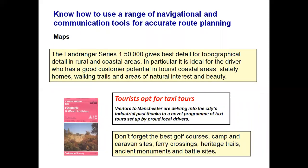Landranger maps give detail on topographical features in rural and coastal areas. They are ideal for drivers with customer potential in tourist areas — stately homes, walking trails, golf courses, areas of natural interest, beauty spots, picnic spots, camp and caravan sites, ferry crossings, heritage trails, ancient monuments and battle sites. In Manchester, black cab drivers have devised a tourist tour around the sites of city centre Manchester and surrounding areas.